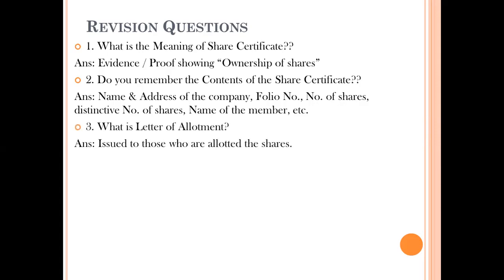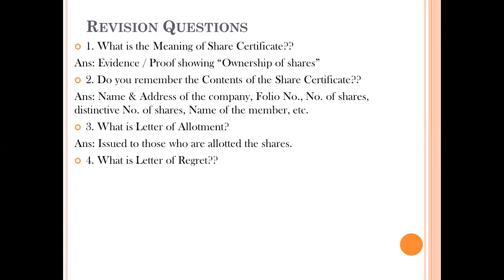The next question: what is a letter of allotment? The letter of allotment is a letter sent by the company — drafted by the secretary — and given to those who are allotted shares of the company. What is a letter of regret? It is the letter issued by the company to those who are not allotted shares.